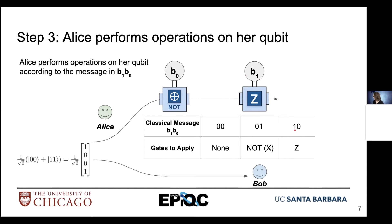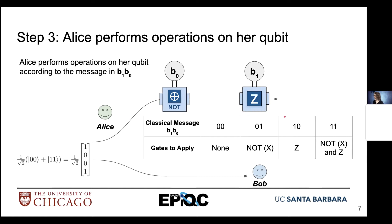Finally, if we want to transmit 11, we apply a NOT gate as well as a Z gate. Both controls will be active since we'll have a value of 1 on both controls. We transform the qubit in Alice's possession with both a NOT operation and a Z operation.